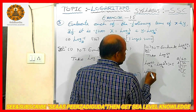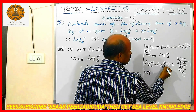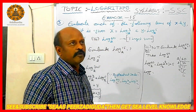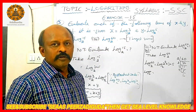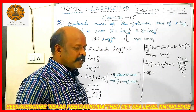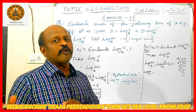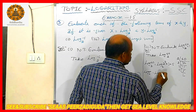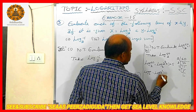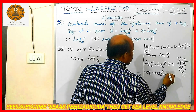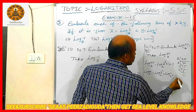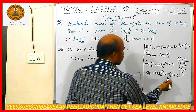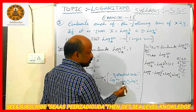Again, log 60 base 2 is equal to log(2² · 3 · 5) base 2. This is in the form log(x·y·z), just like the log(x·y) product rule formula. By product rule, I am going to split it into log 2 squared base 2 plus log 3 base 2 plus log 5 base 2. I already applied the product rule here.